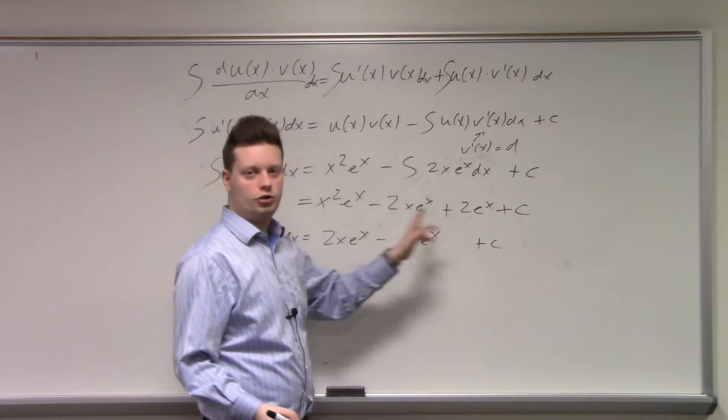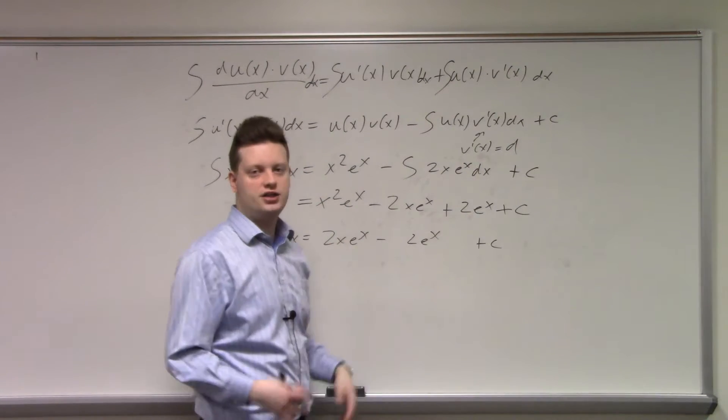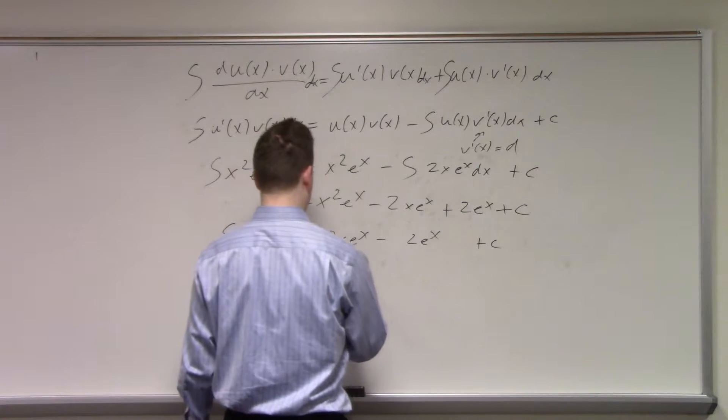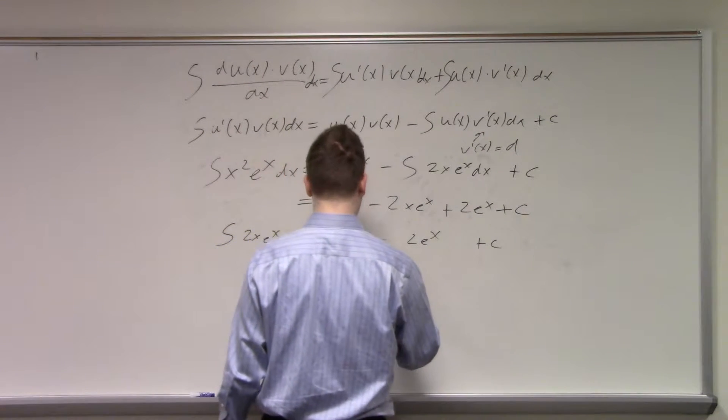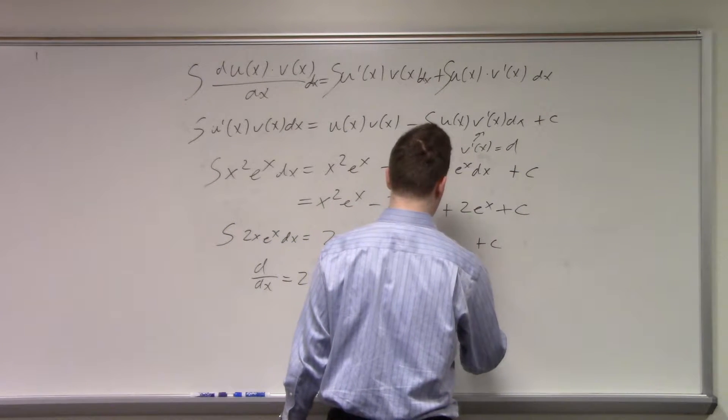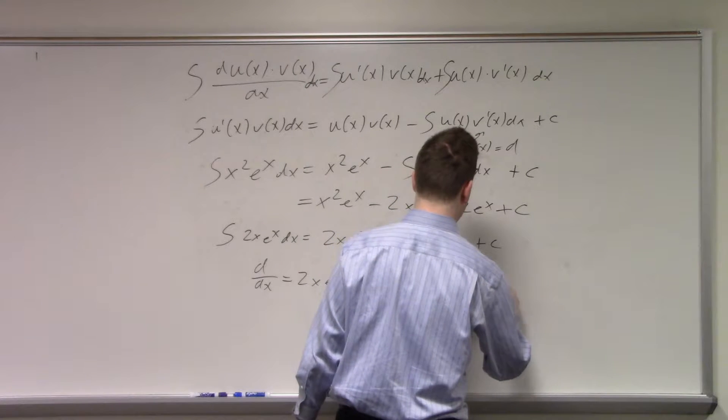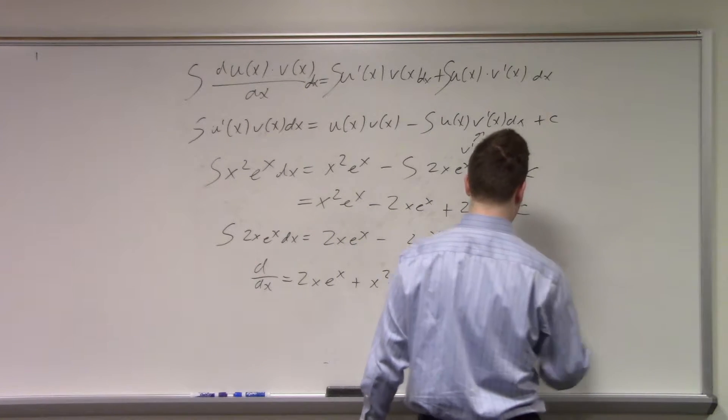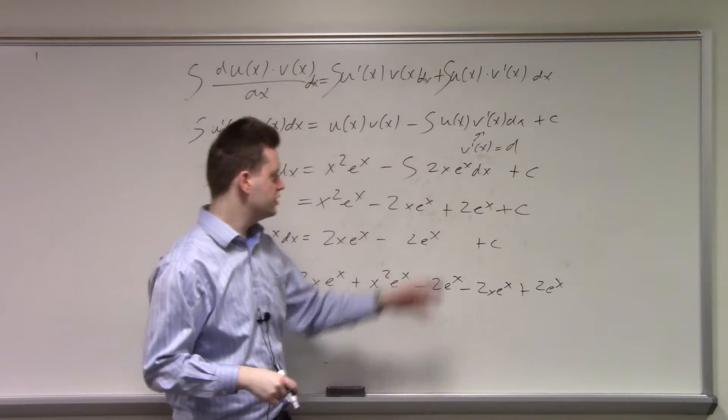Again, we have terms that are multiplied, two functions multiplied, so we need to use the product rule. First term is 2x e^x, plus x² e^x, minus 2 e^x, minus 2x e^x, plus 2 e^x. Constant drops out, doesn't depend on x.